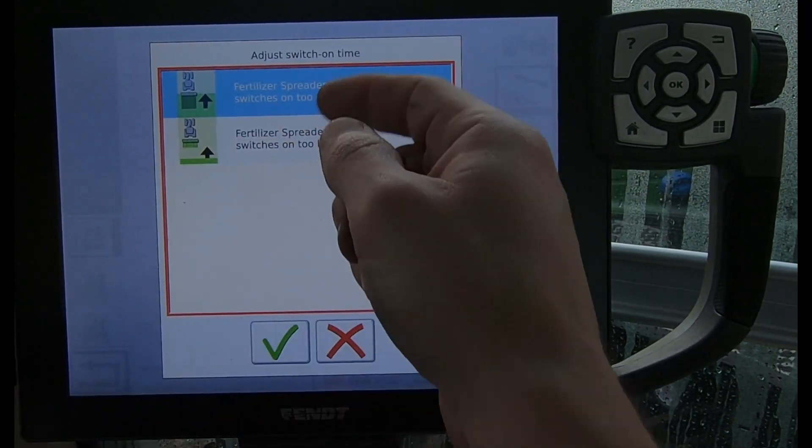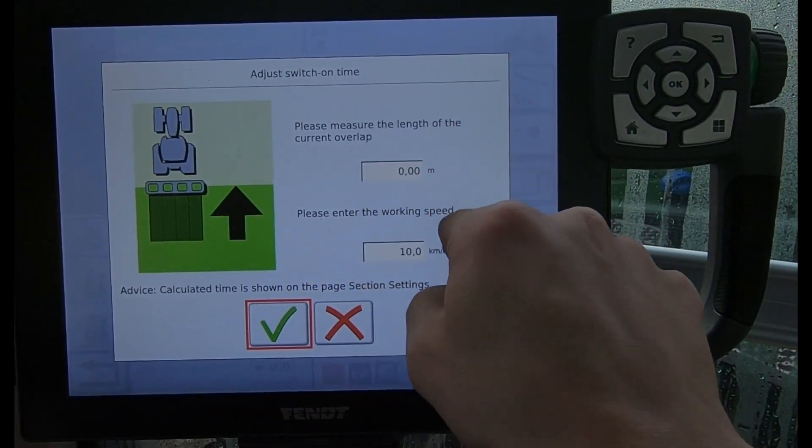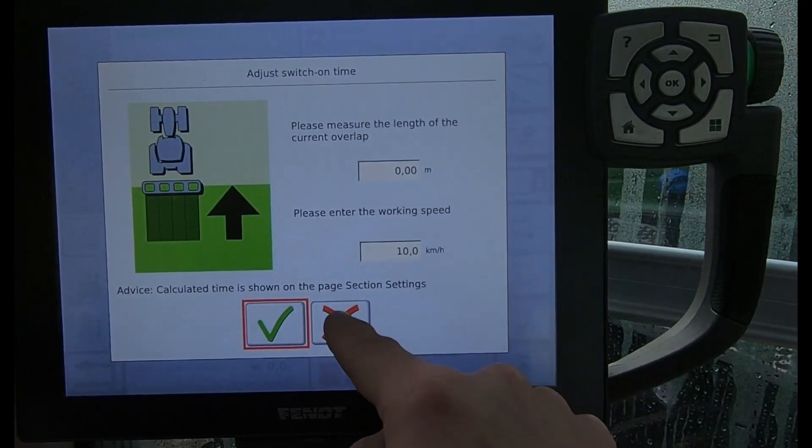You can then put in a distance, put in your turning speed on the headland, and then it will work out a new delay time for the target there.